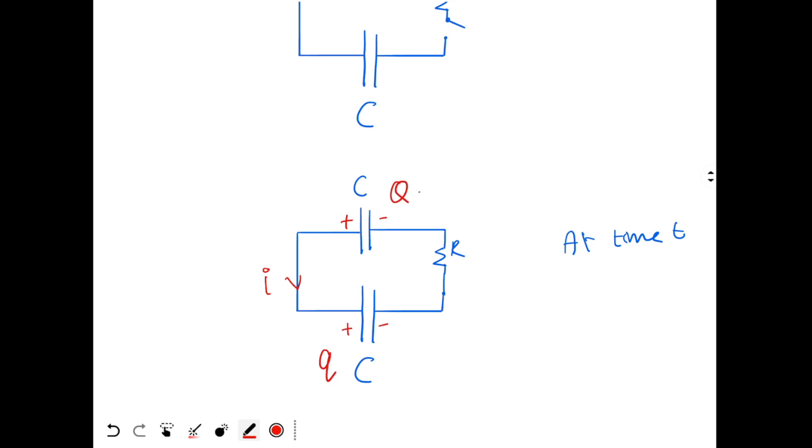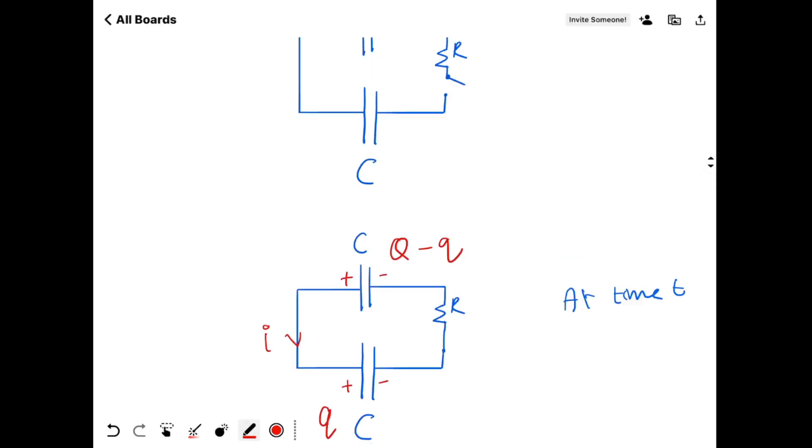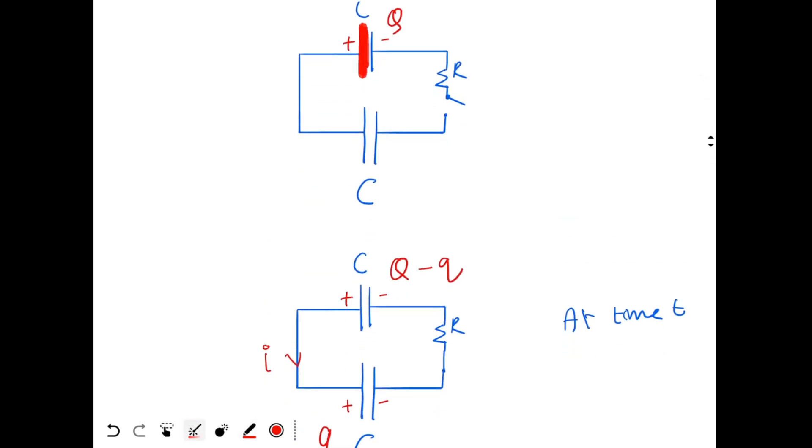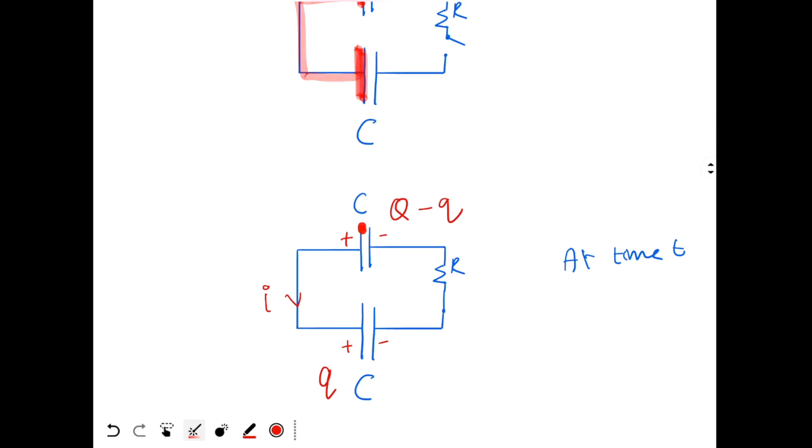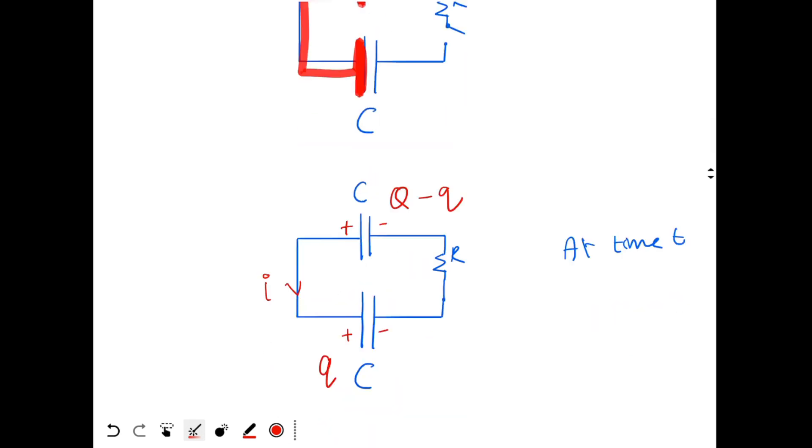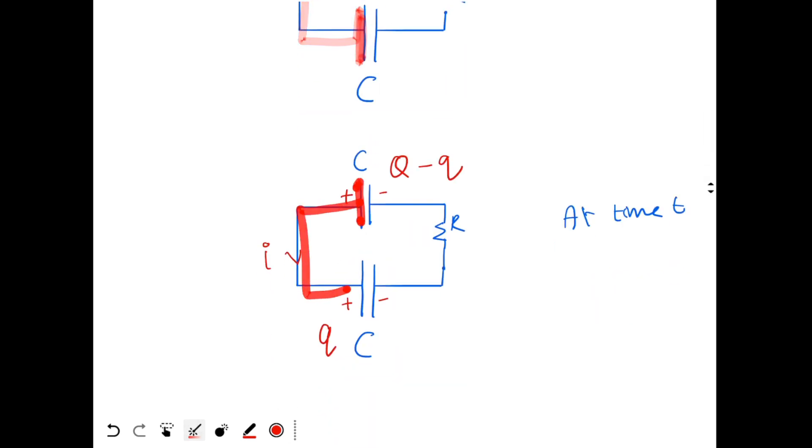Then the charge on the upper capacitor will be Q minus Q. Why? Compare them. Charge on this plate is plus Q. This plate is connected to this other plate. So these two plates are connected together. Here the total charge of these two plates is plus Q. So here also the total charge of these two plates should be plus Q. So Q plus Q minus Q should be equal to again capital Q. So this is my circuit.